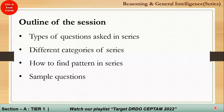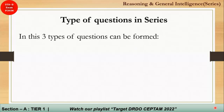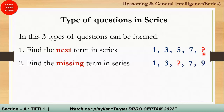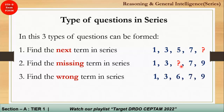There are three types of questions that can be formed. The first one is 'find the next term in the series' — a series is given and you determine what comes next. The second is 'find the missing term in the series' — you identify the missing element. The third is 'find the wrong term in the series' — you figure out which term is incorrect.